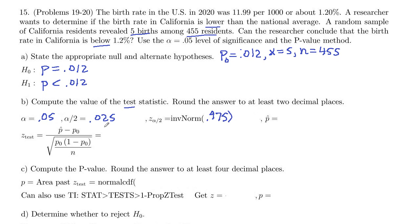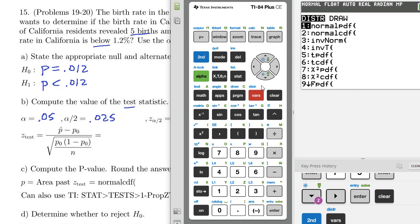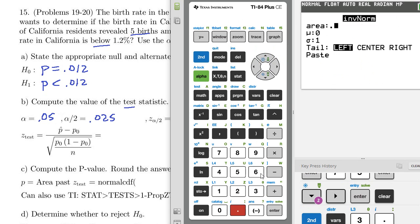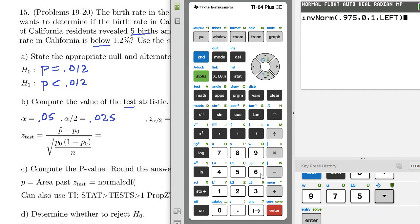Right, because this is the right area, so 0.975, 1 minus 0.025 is the left area. So we compute that real quick. So second variables, we're doing inverse norm 0.975, which is 1.96 to two decimal places.